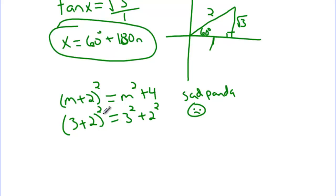Well, you can see 3 + 2 is 5. 5² is 25. 3² is 9 and 2² is 4. What's going on here? They're not equal. That's because that was wrong. You cannot do that. That makes me, see, sad panda crying.